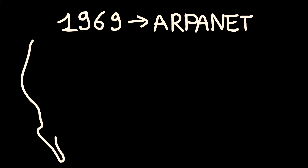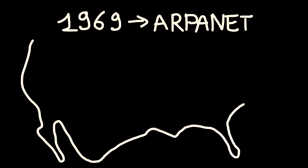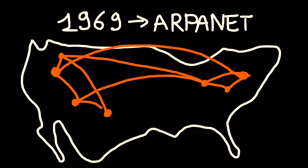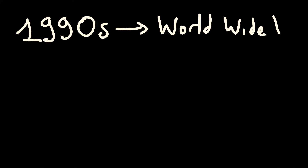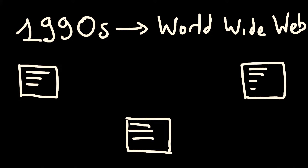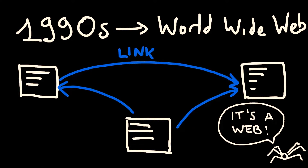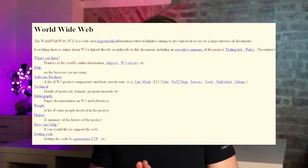In 1979, ARPANET — which we can consider the internet ancestor — delivered the first message from one computer to another, a simple string. Things kept improving until, in the 1990s, Tim Berners-Lee invented the World Wide Web, which was basically a collection of websites interconnected with each other through links. Compared to what we have today, those websites were simply static HTML web pages containing text, images, and links, without any real form of dynamism.